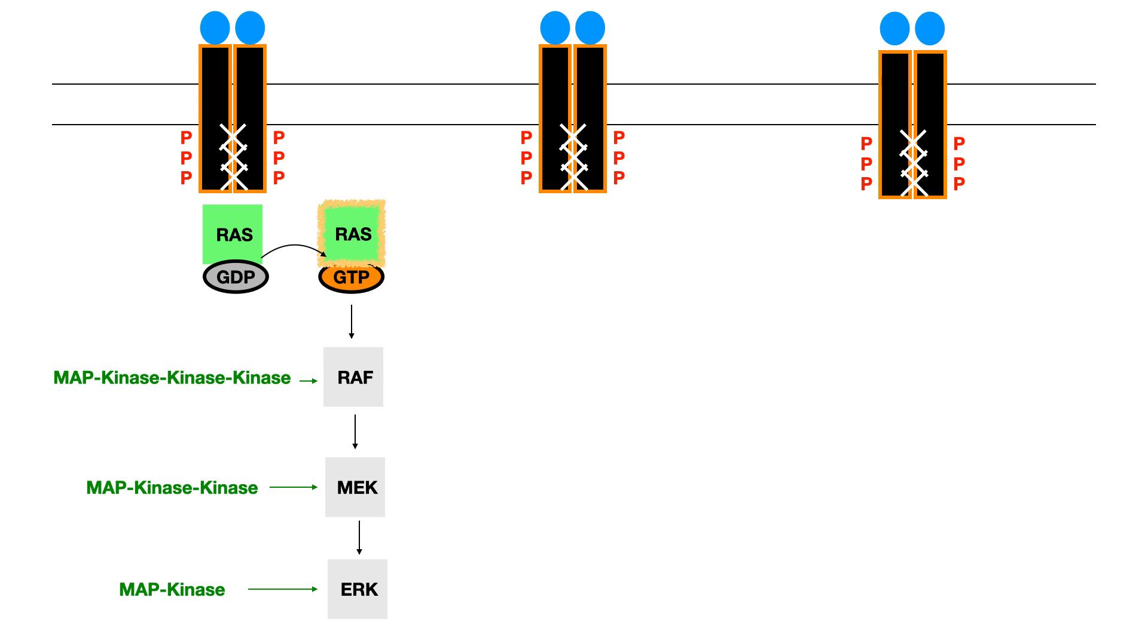So this is a very complex pathway, but for the purposes of USMLE or COMLEX, really what you need to know is how the receptor tyrosine kinase works back at the top. So dimerization, cross phosphorylation, ROS, ROTH, MEK, ERK. And as you go down, you have activators, MAP kinase, kinase, kinase, and then just drop one kinase as you go down. So that's kind of the big picture with a lot of nitty gritty details woven in in between.